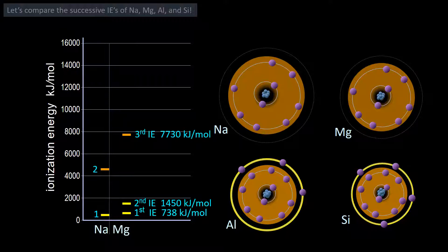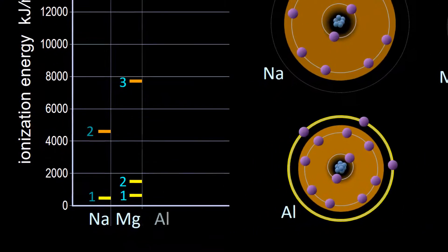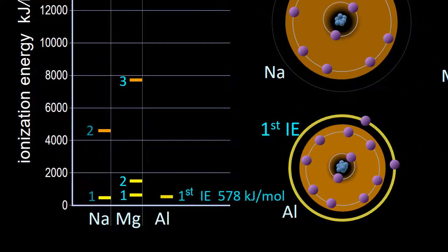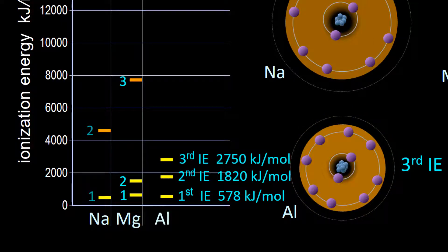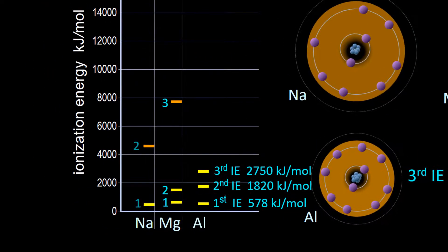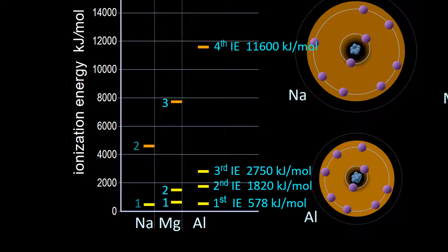Can you see what the pattern will be with aluminum and silicon? What will happen to their ionization energies once they have lost enough electrons to get to a noble gas electron configuration? For aluminum, the first, second, and third IEs are relatively low. Those three ionization energies have removed all the valence electrons. The fourth IE removes an electron from the core electrons, a neon configuration requiring a big jump in energy.